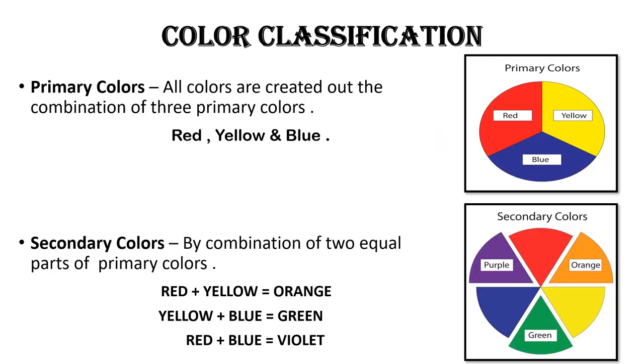We can divide color into three parts: primary color, secondary color, and tertiary or intermediate color.